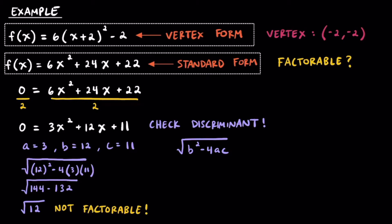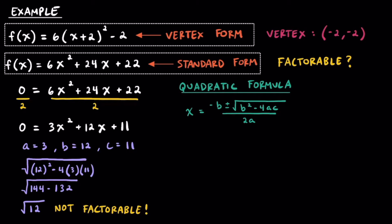However, since it's positive, that means we will have two x-intercepts, they just won't be rational numbers. Given that we can't factor, let's go ahead and use the quadratic formula. Here we have the quadratic formula, and keep in mind that we already know that this part is equal to the square root of 12. Substituting the other values into the quadratic formula, we have (-12 ± √12) / (2 × 3).